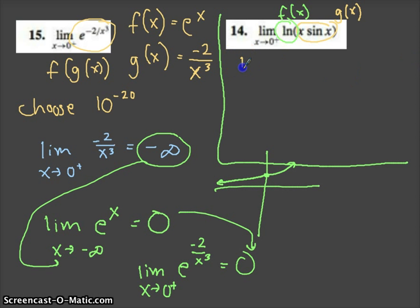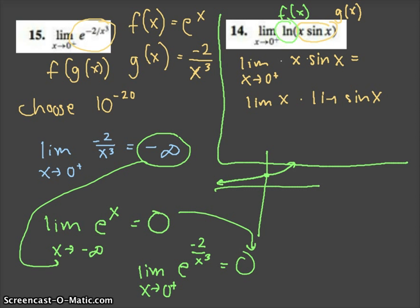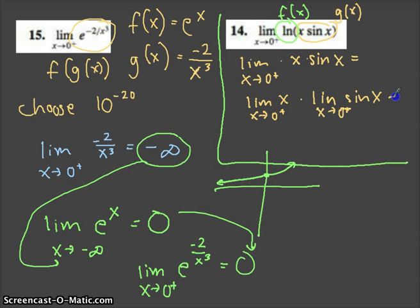Let's look at the limit as we approach 0 from the right of x times the sine of x. We've seen this before. x is positive and really small, so we can think of this as the limit of x times the limit of sine of x. The limit of x as x approaches 0 from the right is 0. The limit of sine of x as x approaches 0 from the right is also 0. So this product is 0.